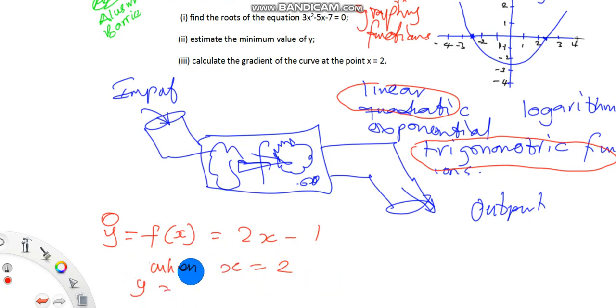When x is 2, y will be the image of x, so f(2), the image of 2. This will be equal to—we take the function, so anywhere we see x we just put the value 2 there—2(2) minus 1. This will be equal to 2 times 2 gives us 4, and we deduct 1, so 4 minus 1 is 3.